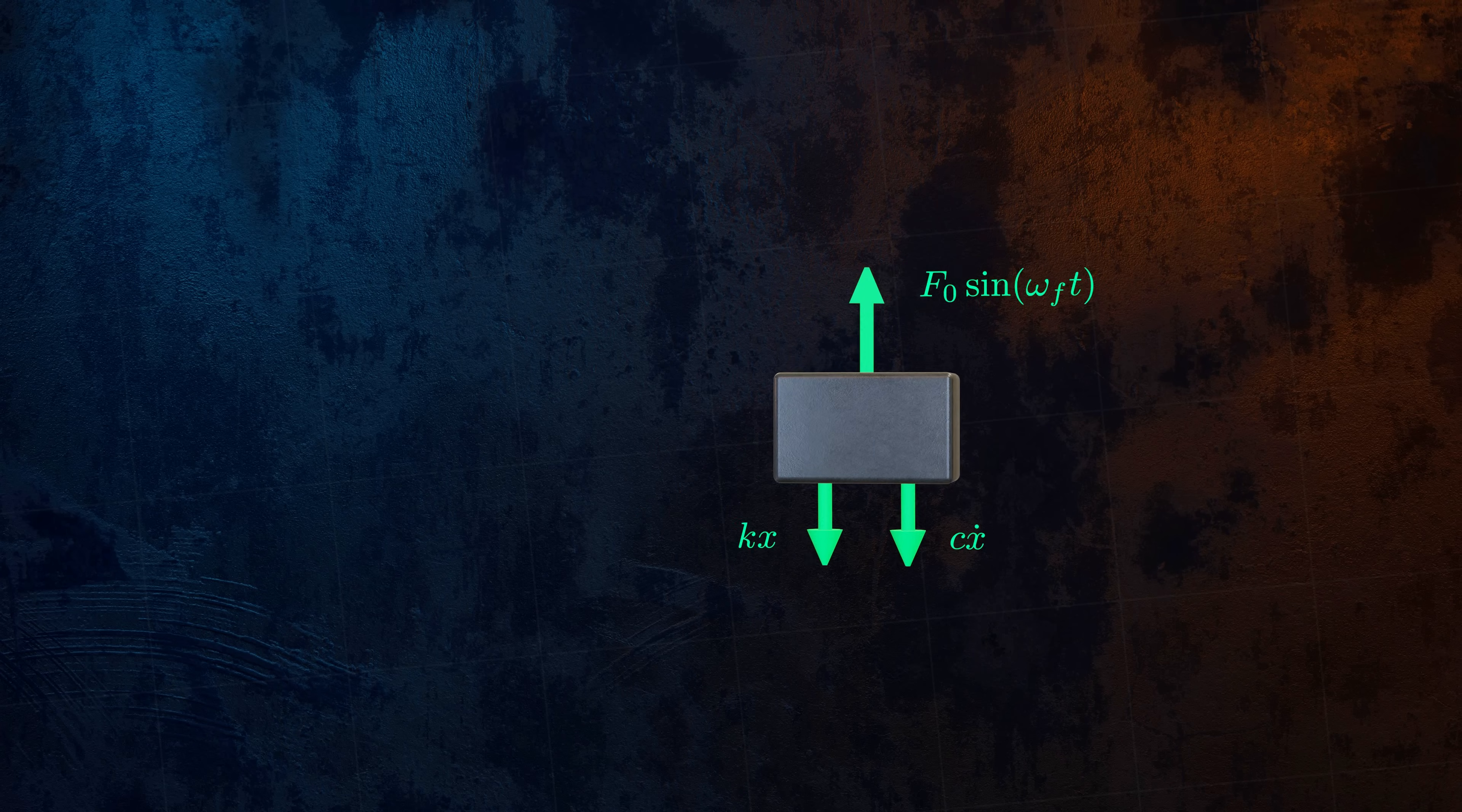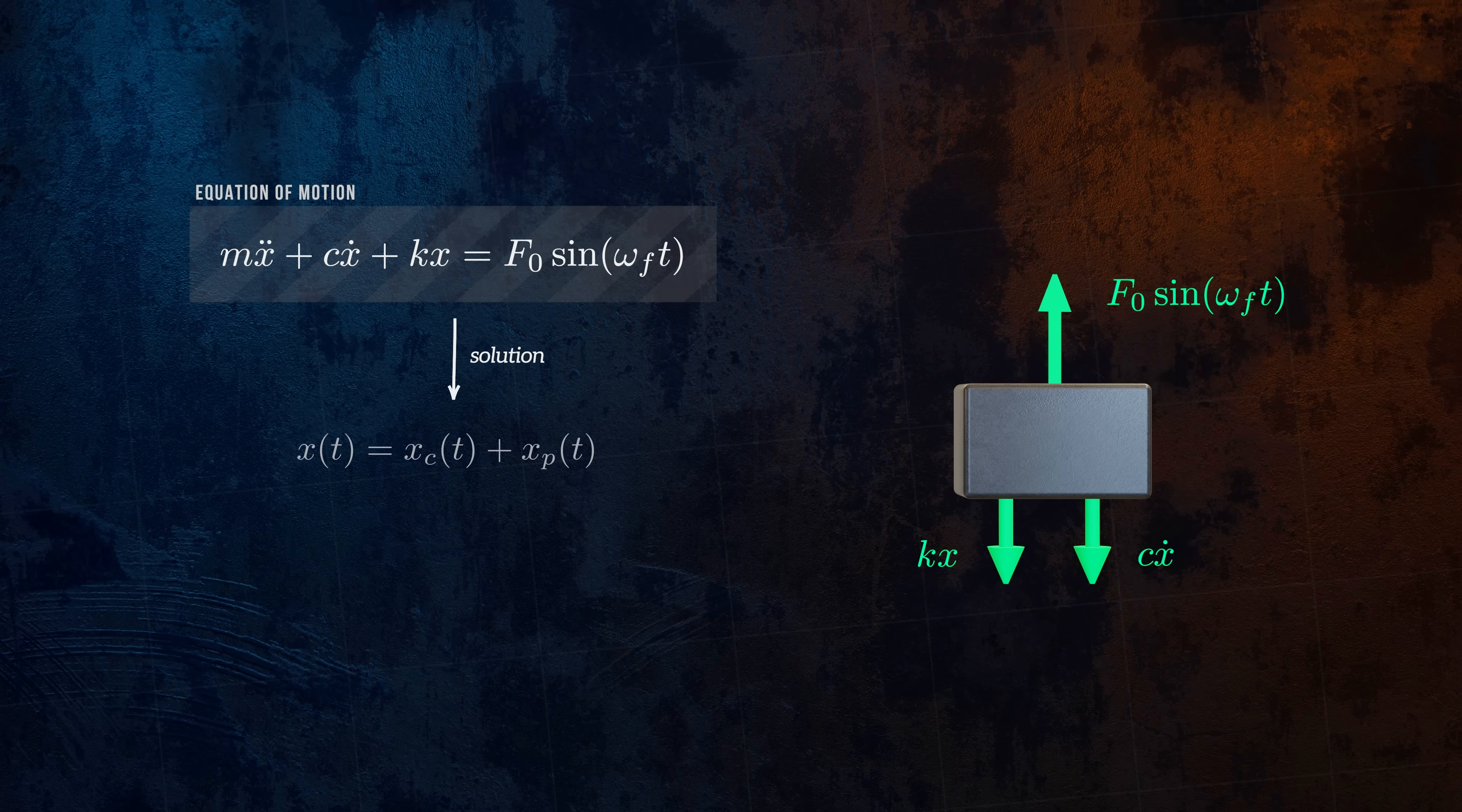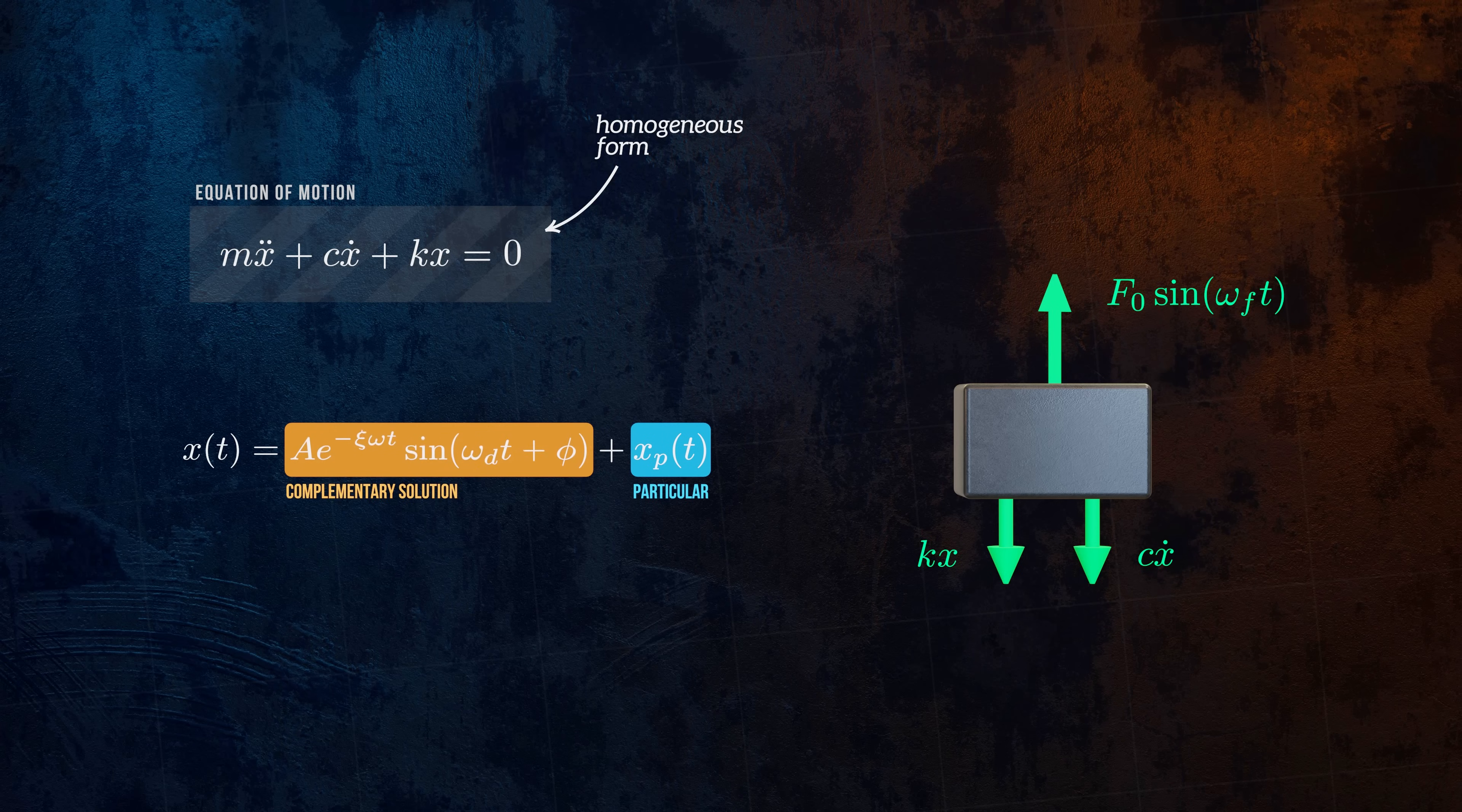The resulting equation of motion is similar to the free vibration case but is a non-homogeneous differential equation. Its solution is the sum of two functions, a complementary solution and a particular solution. The complementary solution is the solution to the homogeneous form of the equation, where the right-hand side is equal to zero. This is just the solution to the equation of motion for an underdamped system in free vibration that we saw earlier.